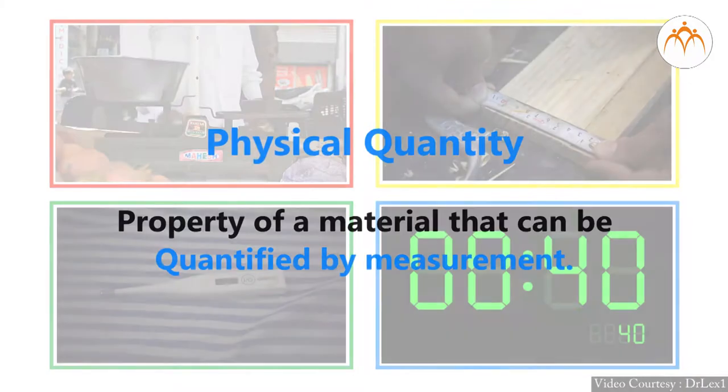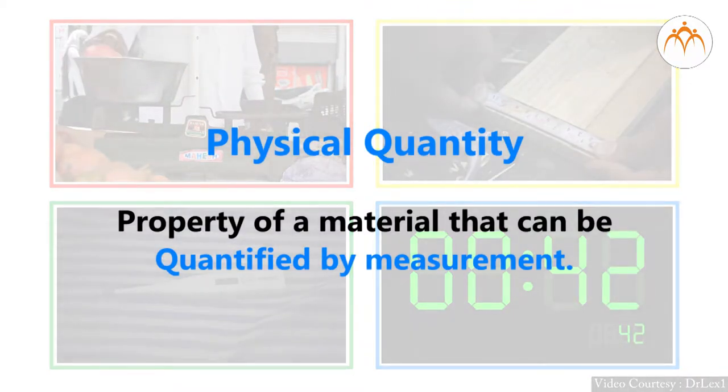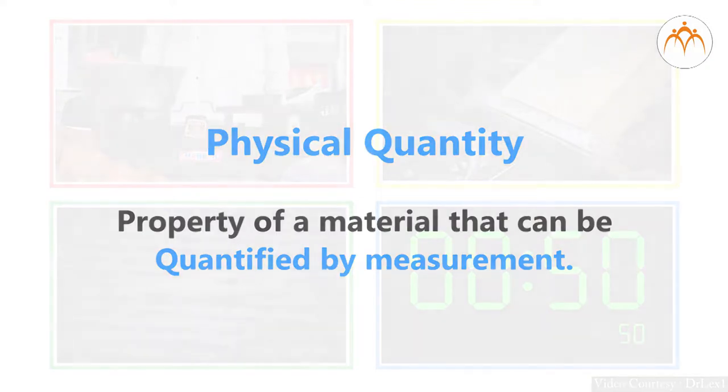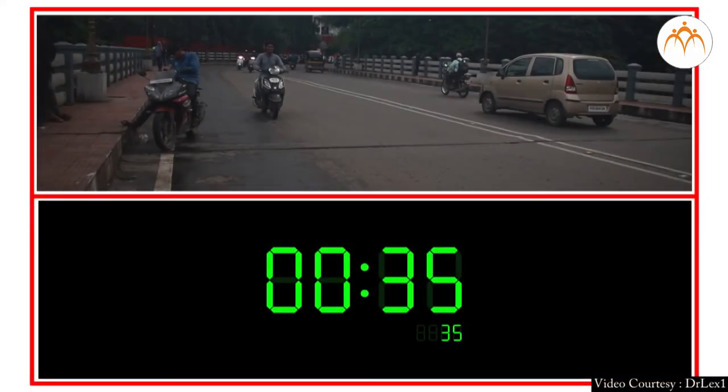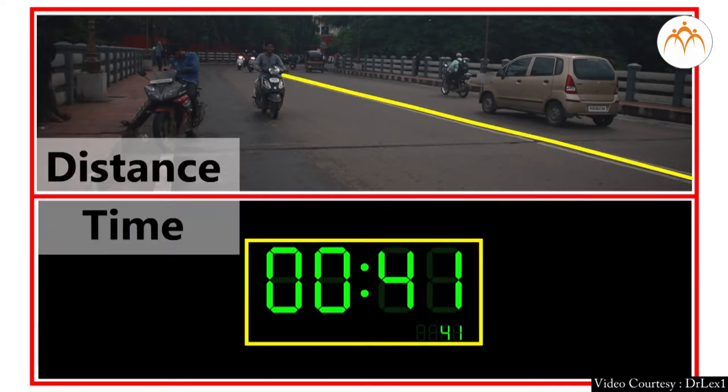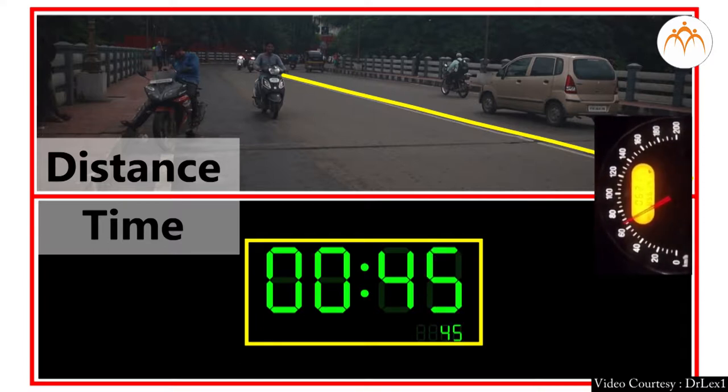A physical quantity is a property of a material that can be quantified by measurement. Physical quantity can be defined by specifying how it is measured. There are other physical quantities which can be calculated from other quantities. We define distance and time by specifying methods of their measurement. How about speed? How speed is calculated?